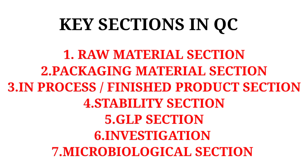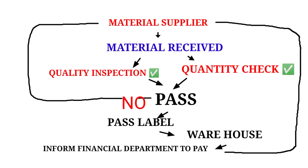The investigation section handles out-of-specification results, where a formal investigation must be conducted. The microbiological section is responsible for testing raw materials, finished products, and in-process materials for microbiological quality.